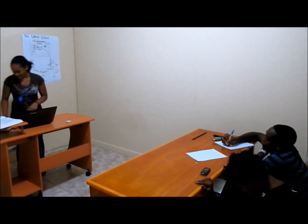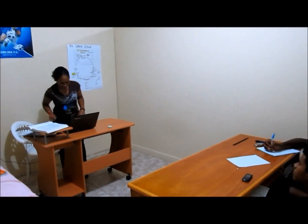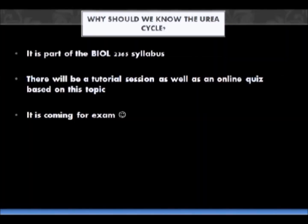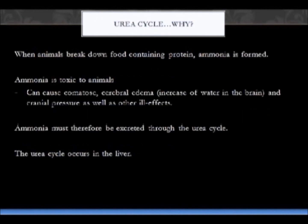So for today's class, we will be doing the urea cycle, which is part of nitrogen metabolism. The topics we will cover in this lecture today are the function of the urea cycle, where it occurs, the different types in different organisms, the reactions involved in the urea cycle, and the enzymes facilitating these reactions, and disorders or diseases in the urea cycle.